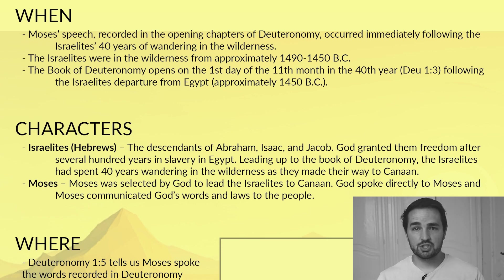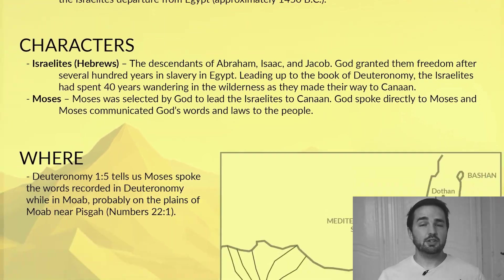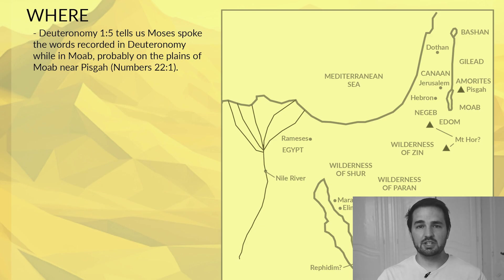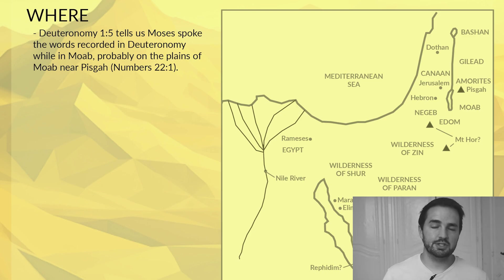We've also got Moses. He grew up in Pharaoh's household in Egypt, but God selected him to lead the people of Israel out of Egypt and lead them to the promised land. And in terms of our map, pretty much the entire book of Deuteronomy to this point has occurred in Moab. Moses is giving some speeches to the Israelites, telling them God's laws and reminding them before they go into Canaan — that happened in Moab, probably on the plains of Moab near Mount Pisgah, which you'll see on the map.